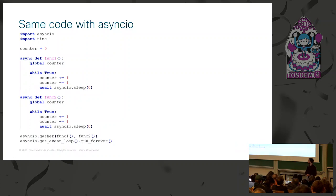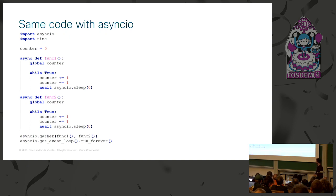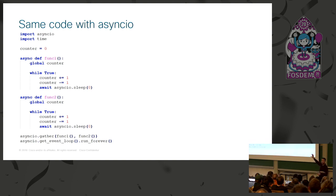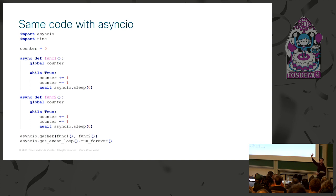Now let's look at asyncIO. We have two functions — function one and function two — that we're going to run in parallel, doing the same increments and decrements. These functions are not normal functions; there's 'async' in front of the 'def' keyword, which means they're asynchronous functions, and there's an 'await' as well.